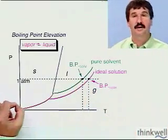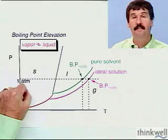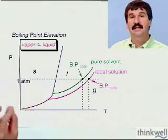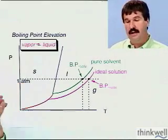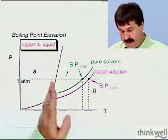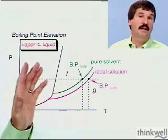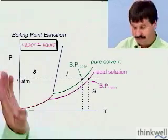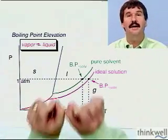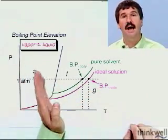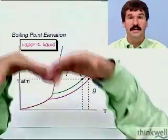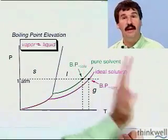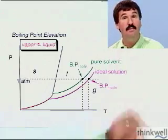This is what we refer to as boiling point elevation — another colligative property, a property that does not depend on the chemical nature of the solute, but it does depend on the chemical nature of the solvent. The more we dissolve, the lower the vapor pressure drops, the further we push the boiling point out, and the higher the boiling point becomes.